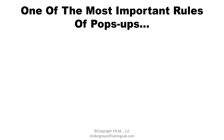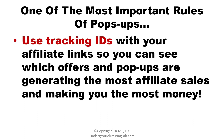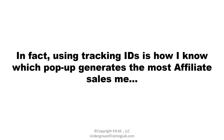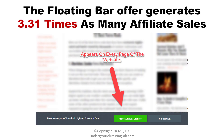One of the most important rules of pop-ups is that you need to use tracking IDs with your affiliate links so you can see which offers and pop-ups are generating the most affiliate sales and making you the most money. Fortunately, most major affiliate networks like CJ.com, ClickBank, or JVZoo all allow you to create tracking IDs. Even Amazon allows tracking IDs so you know exactly which links, offers, pop-ups, and color combinations are making you the most sales. Using tracking IDs is how I know that the floating bar offer generated the most affiliate sales — 3.31 times as many as my other pop-ups.